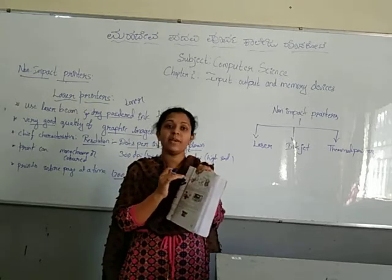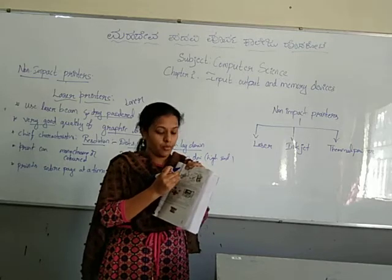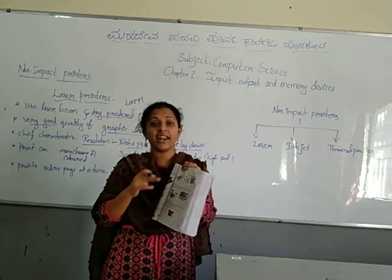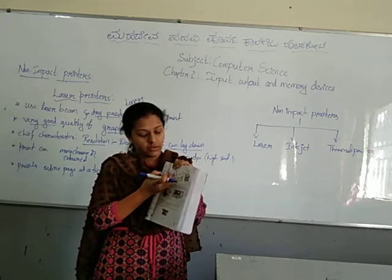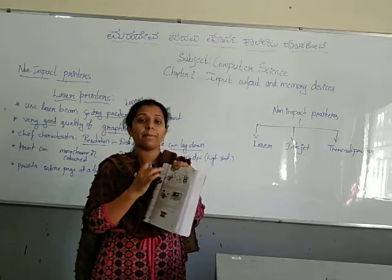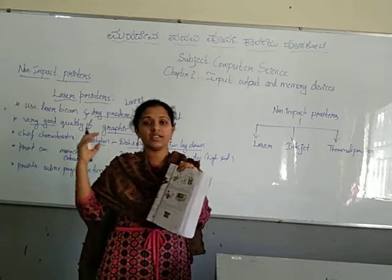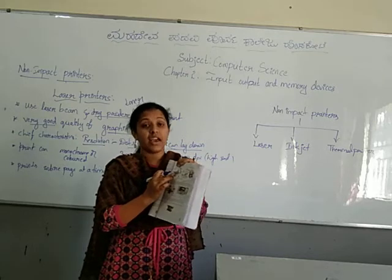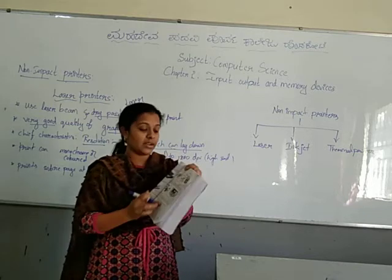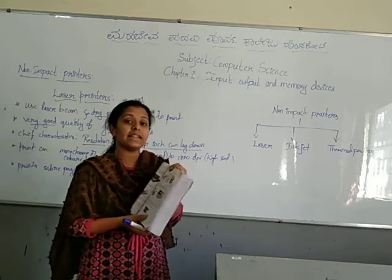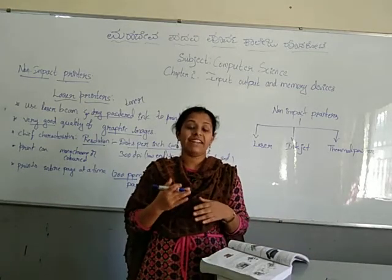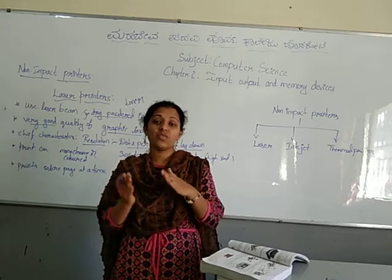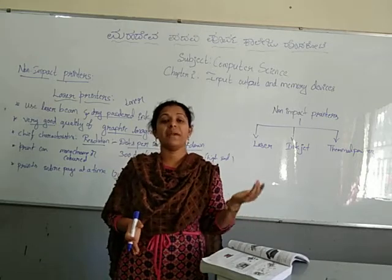The drum will be charged — positive and negative charges attract. The area that needs to be printed will be charged, and the paper flows over the drum so that only the charged part gets printed. The toner dry powder is attracted to those charged areas to produce the output. The drum can rotate at high speed, and only positively charged places will get printed on the paper.